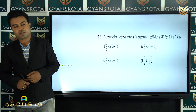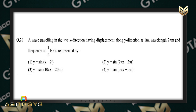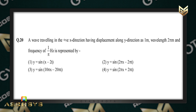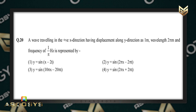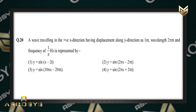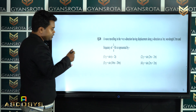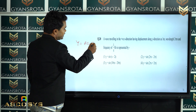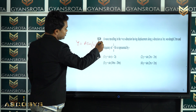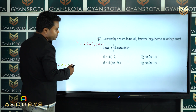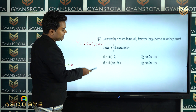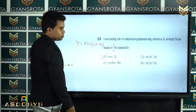Question 20: a wave traveling in the positive x-direction has displacement along the y-axis of 1 meter, wavelength 2 meters, and frequency 1/π hertz. The displacement equation is represented by a sine function of the form sin(ωt − kx). Using simple harmonic motion from the waves chapter, the right answer is option number 1.